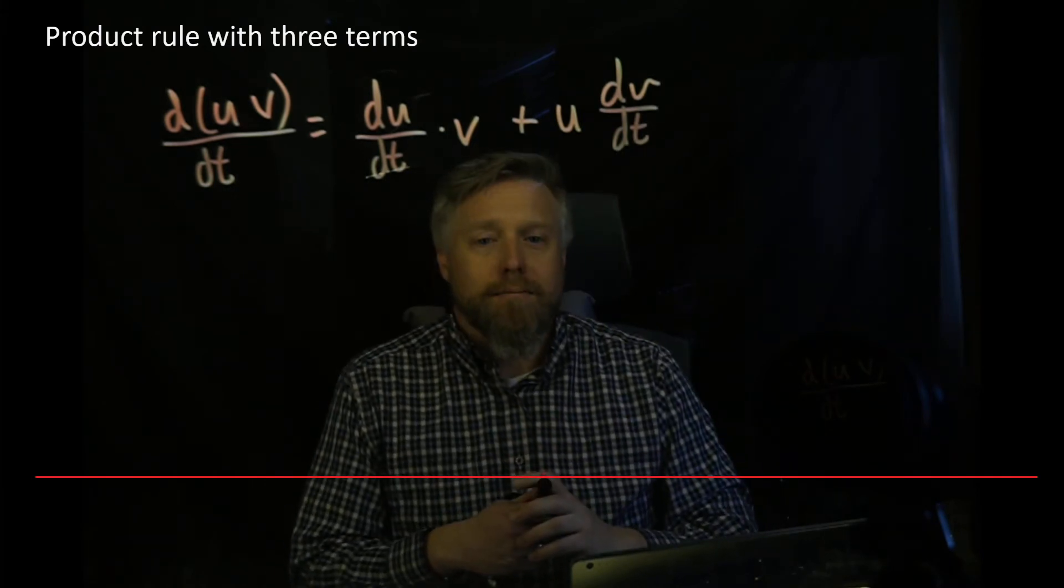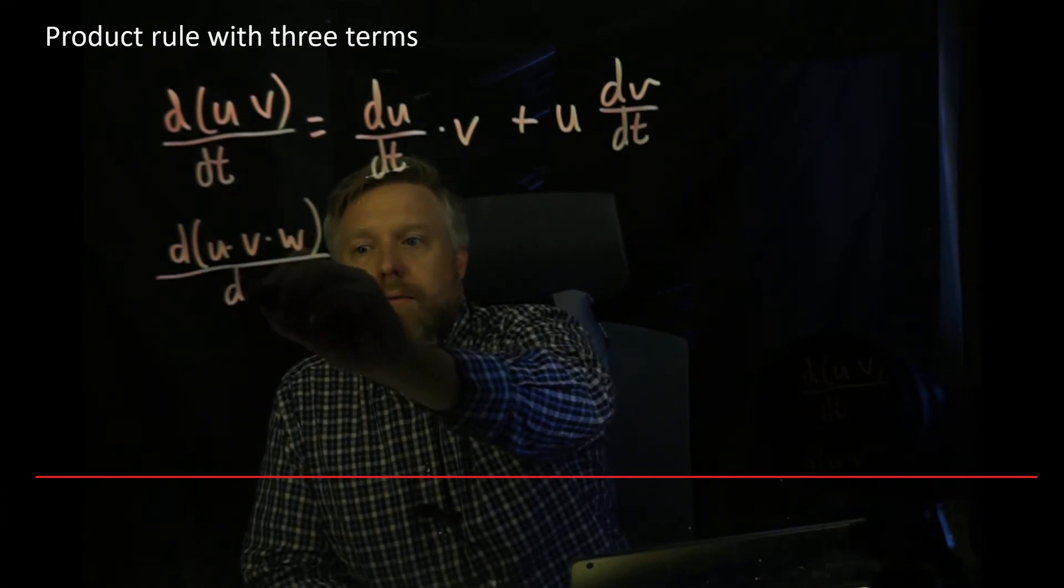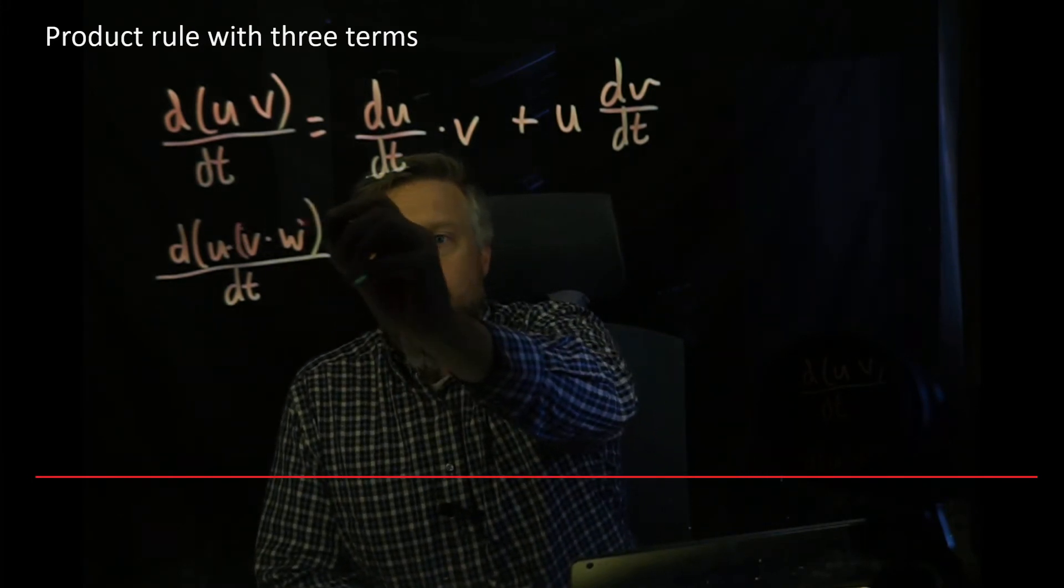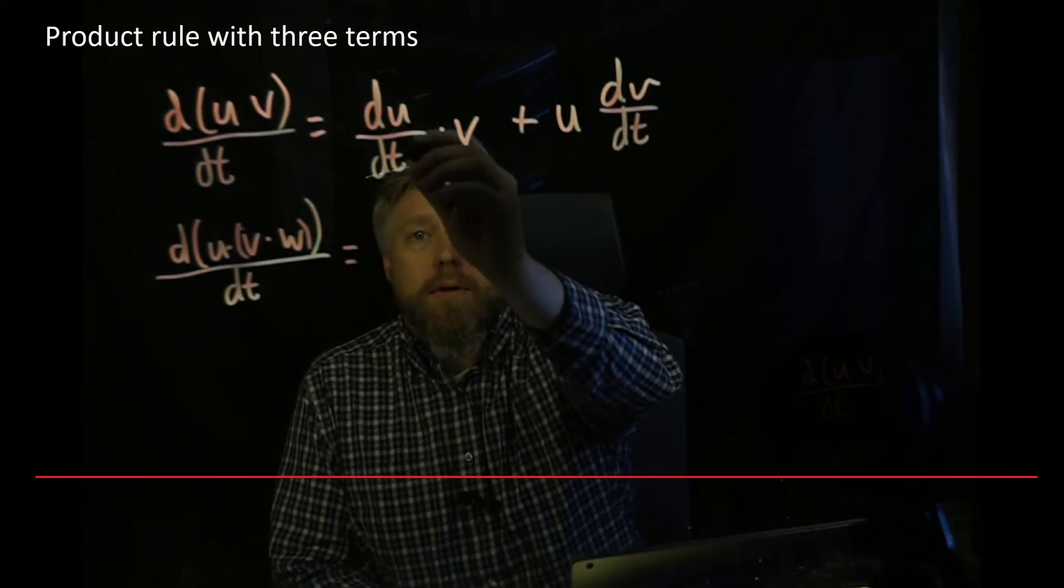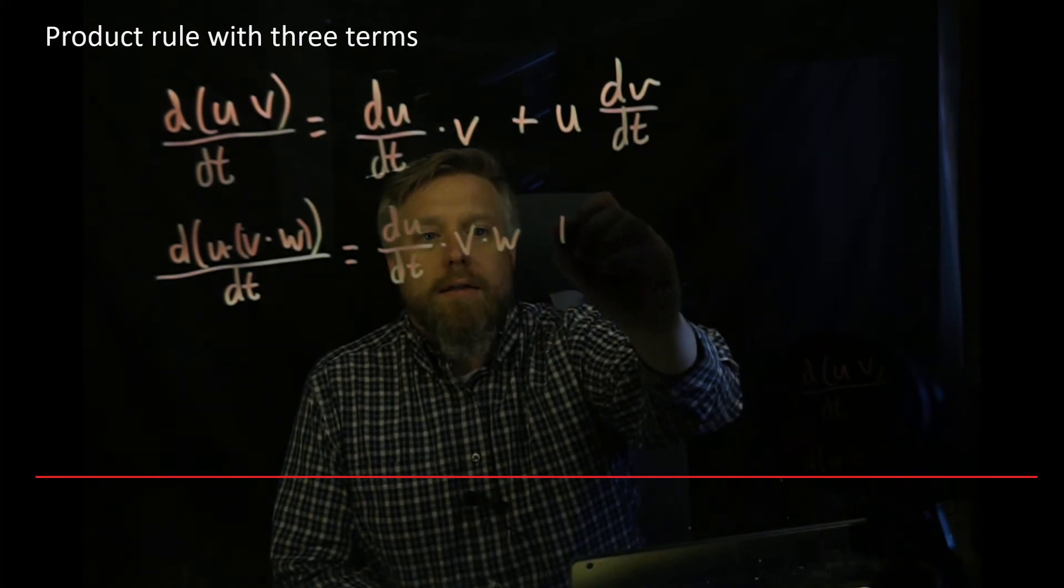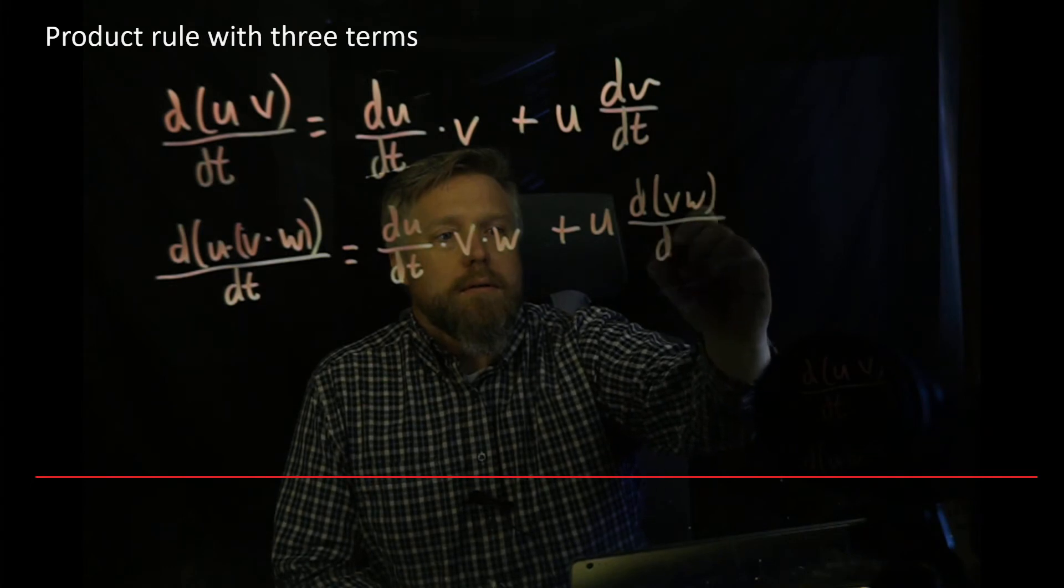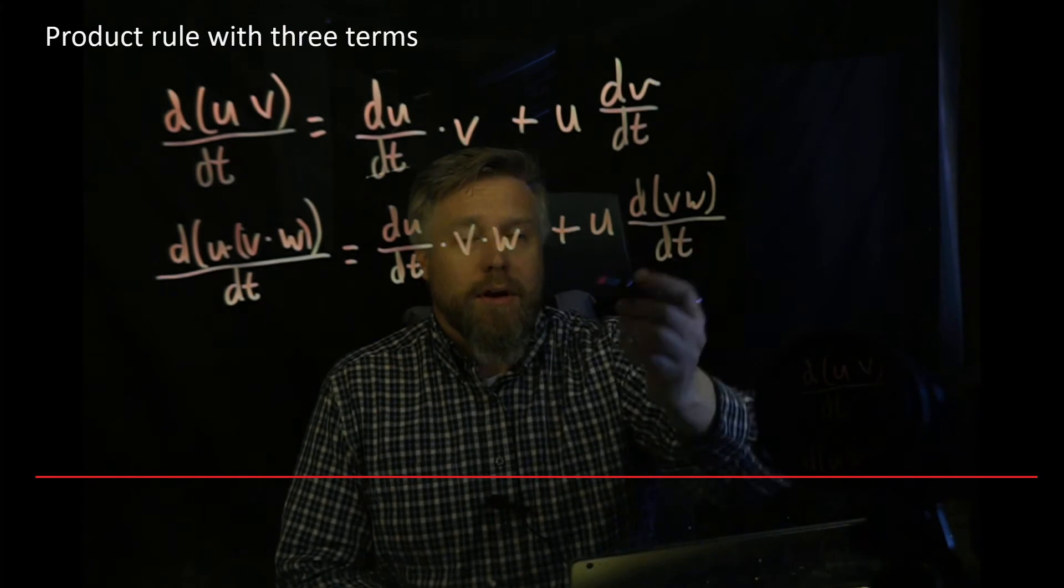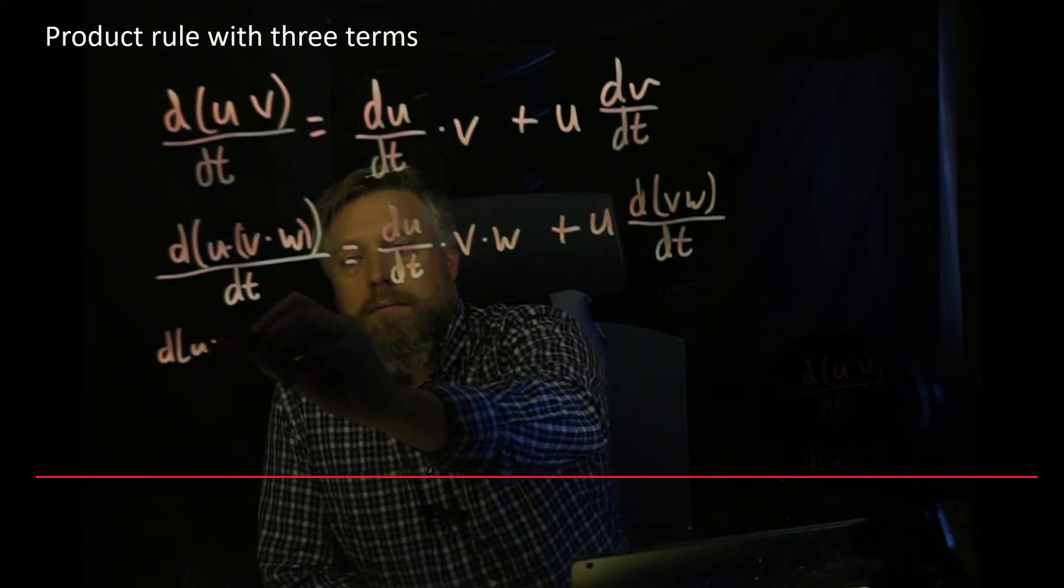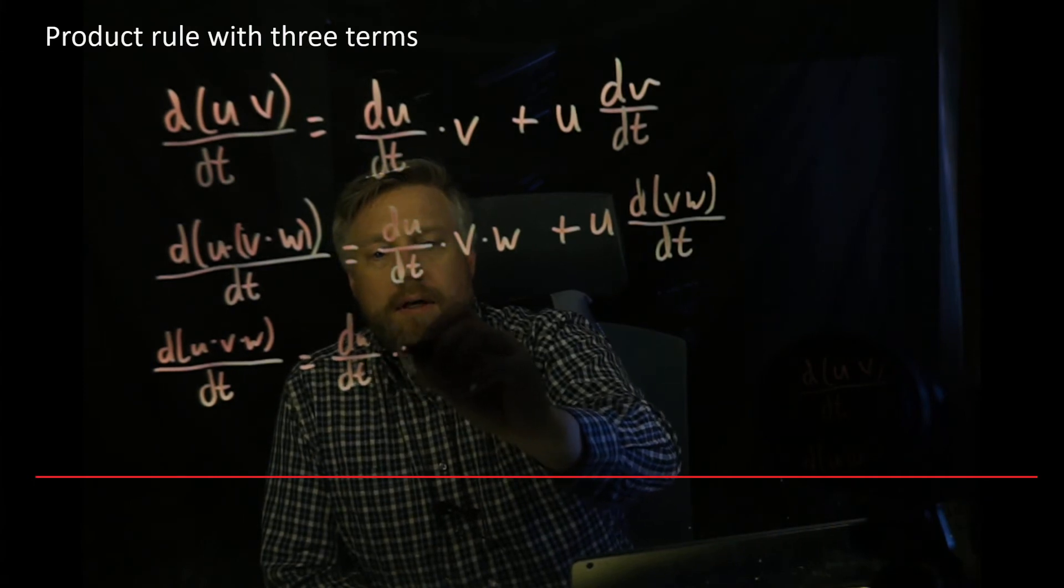Now what happens if we add w? We have the derivative of u times v times w—three things multiplied together with respect to time. How we solve this is simple. First, we treat v and w like a single term and do the same thing we did before. We'd have du/dt multiplied by v multiplied by w, plus u multiplied by the derivative of vw with respect to t. You can see we just have another product rule to do. So the first term is du/dt times v times w.